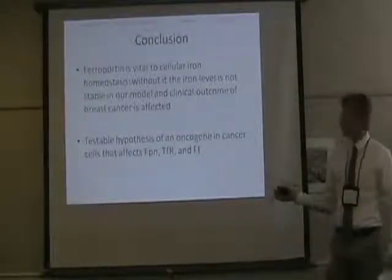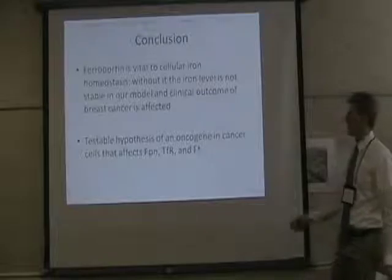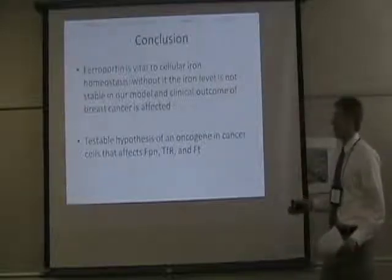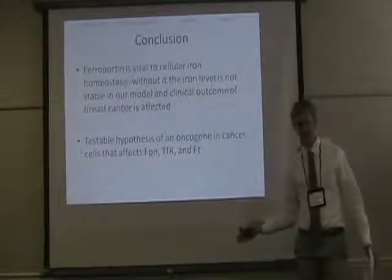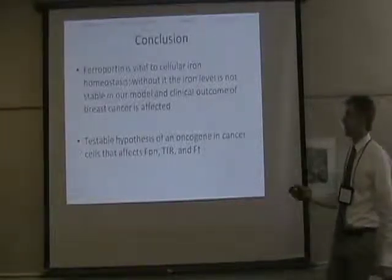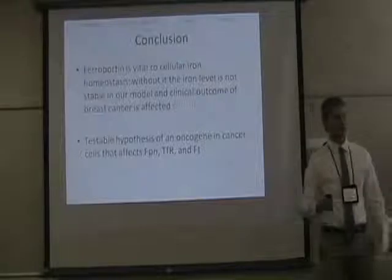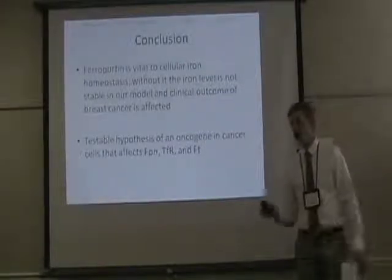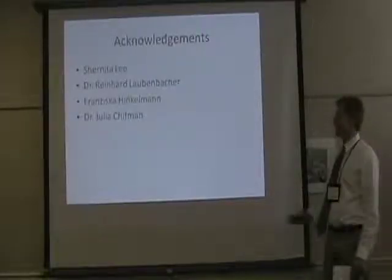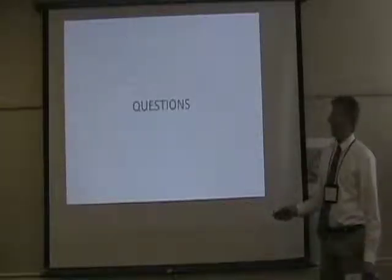In conclusion, ferroportin is vital to cellular iron homeostasis — vital to achieving a steady amount of iron in the cell — and without it, the iron level isn't stable. The clinical outcome of breast cancer is affected by ferroportin. We also generated a testable hypothesis of an oncogene in cancer that would have to affect ferroportin, transferrin, and ferritin in a certain way to produce a phenotype of high iron in the cell. Thanks to collaborators Nalmich, Anita Lee, Berkman, Dr. Reinhard Lagenbacher, Francisca Eskelman, and Dr. Julie Schumann.